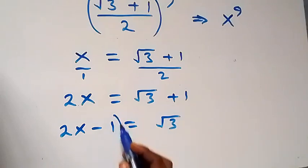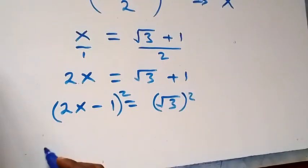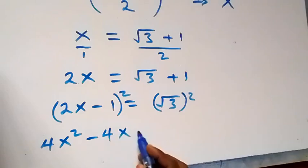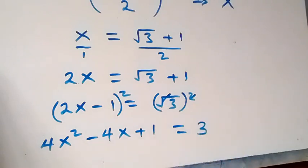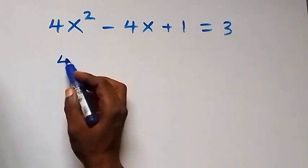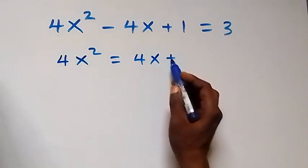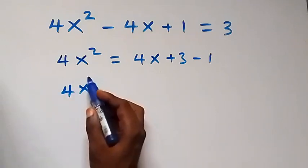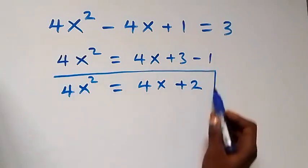Take 1 to the other side: 2x minus 1 equals root 3. Now let's square both sides. The expansion on the left side gives us 4x² minus 4x plus 1, equals 3 — the square cancels the square root. Taking minus 4x and plus 1 to the right side, we get 4x² equals 4x plus 3 minus 1, which gives us 4x² equals 4x plus 2.